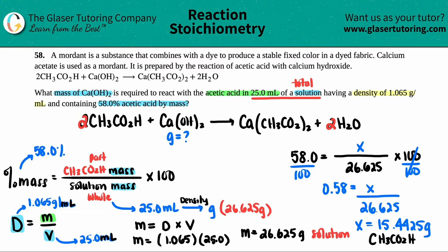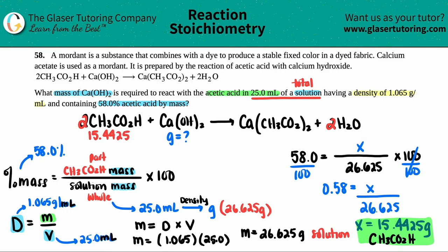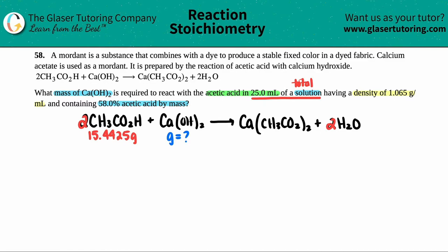There's a lot of math going on here, so I'd highly suggest pausing the video. We did all this work basically just to get the mass of the acetic acid — 15.4425 grams. I'll write that number underneath the acetic acid in the equation and the rest of that work is done.